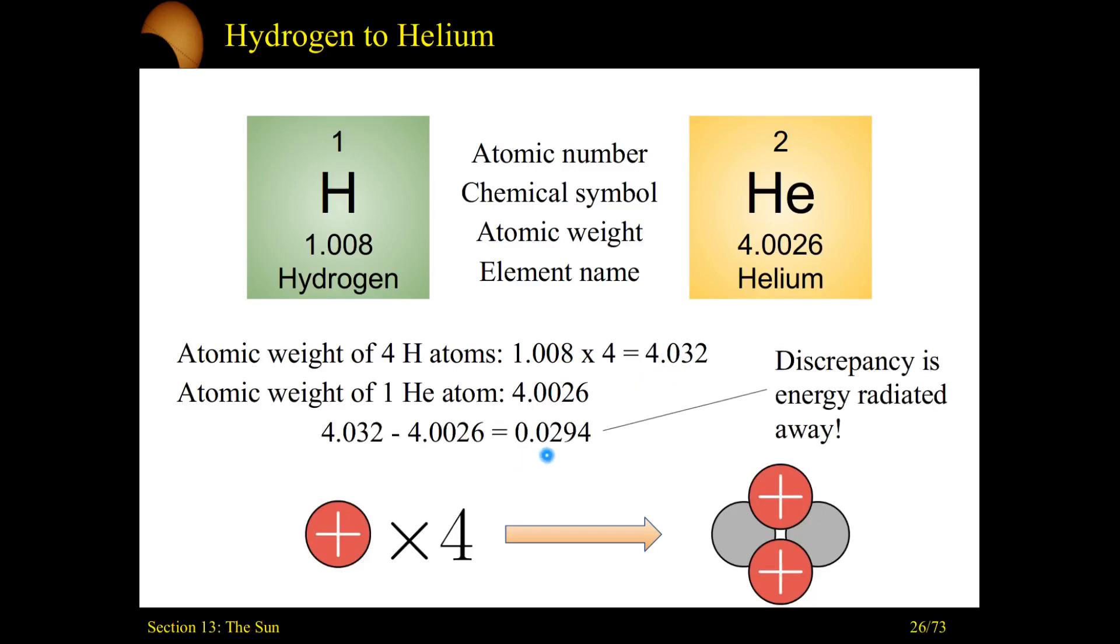There's a discrepancy. There's a difference of 0.0294 atomic units. This discrepancy, this difference. Four hydrogen atoms weighs just slightly more than one helium atom. And that difference, that discrepancy, that's the energy that we get to consume today.